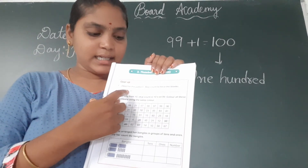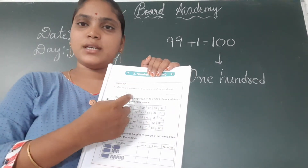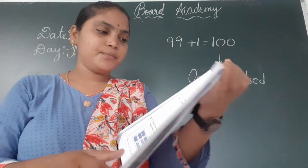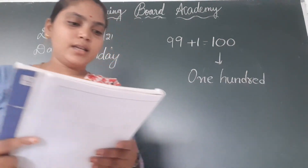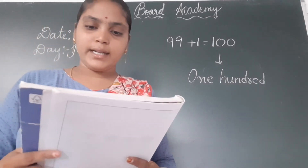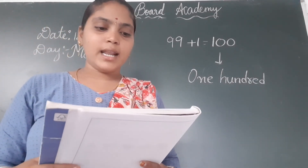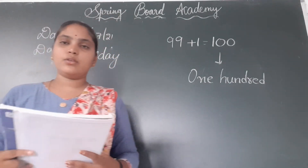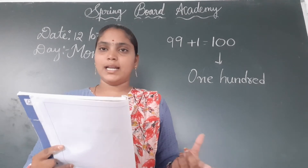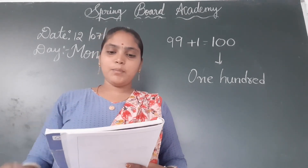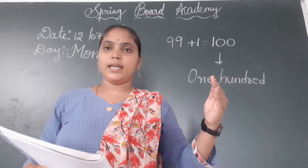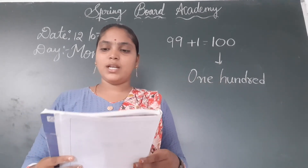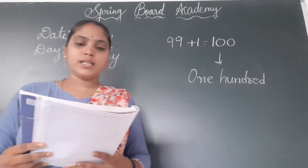So: 20, 30, 40 — which one comes next children? Skip count in 10s: 50, 60, 70. Like that you have to complete. Second row: starting from 10, skip count in 10s till 90. Color all these numbers using the same color. In the second row, you have to take one color and skip count in 10s till 90.